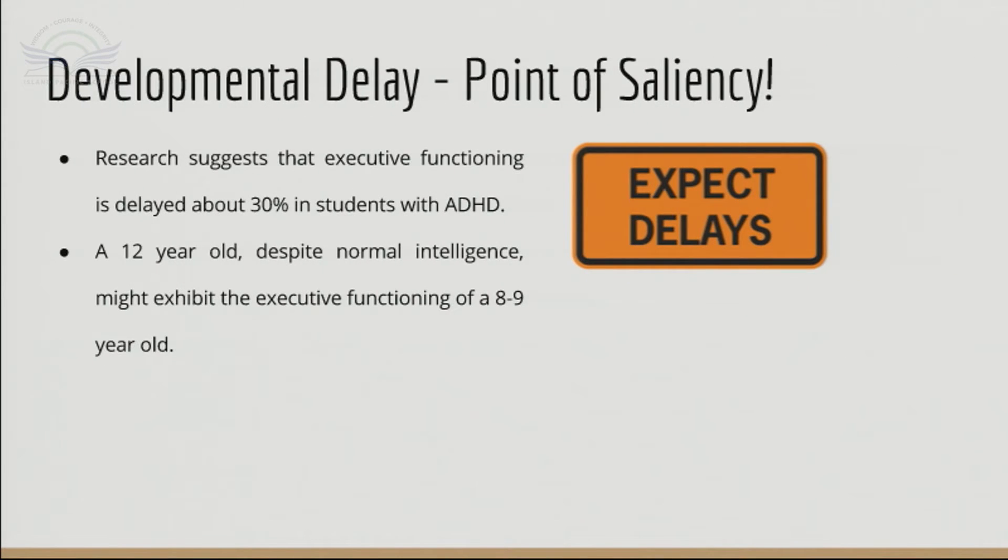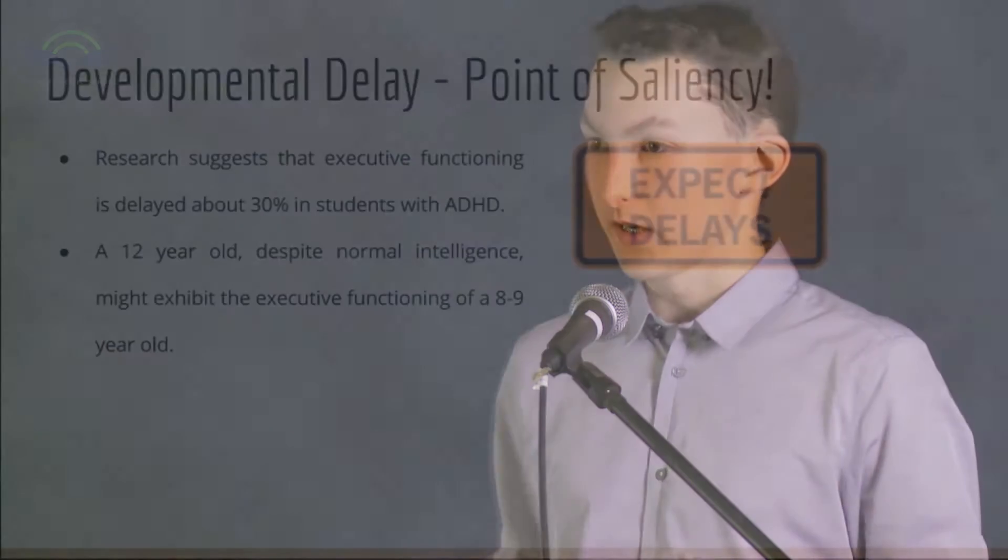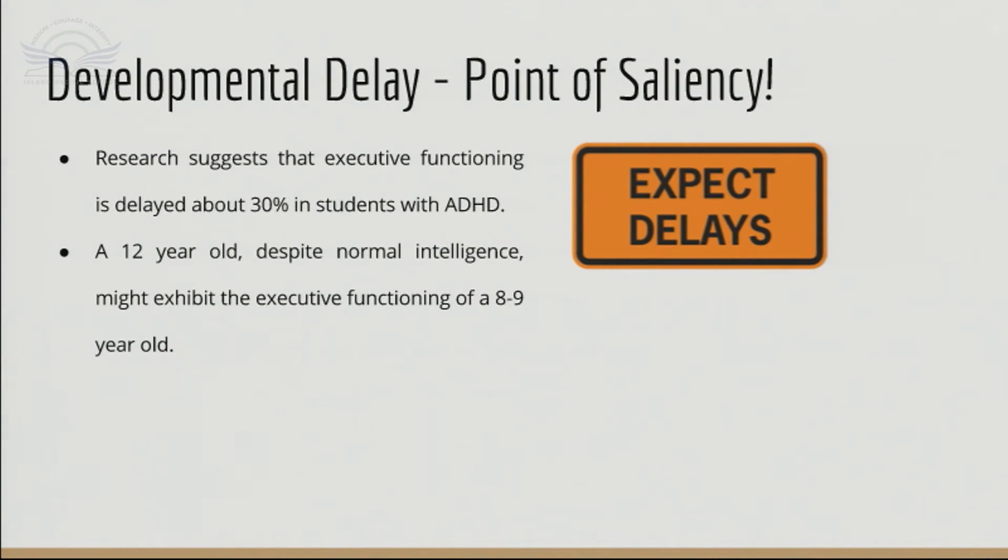Expect delays. An important part of understanding ADHD and why some ADHD people act as they do is knowing that there's a rough developmental delay in their executive functioning skills. Now, this is not to say that the delay affects every kid with ADHD. However, it is prominent in people with ADHD. Research suggests that executive functioning is delayed 30% in students with ADHD. So a 12-year-old, despite normal intelligence, might exhibit the executive functioning of an 8- to 9-year-old, leaving them more adult-dependent.